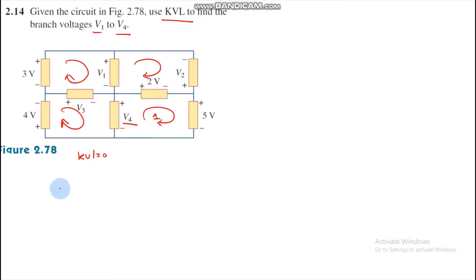The rule is sum of all voltages equals zero. Then minus V4 plus 2 volts plus 5 equals zero. Minus V4 plus 7 equals zero. Then V4 equals minus 7. We have got V4 equals minus 7.